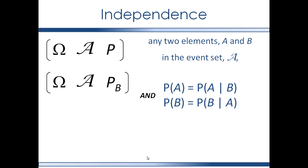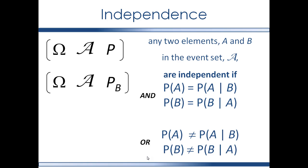If the probability of A is equal to the probability of A given B, then A and B are independent elements in the event set. As well, if the probability of B is equal to the probability of B given A, then A and B are independent elements in the event set. So this is the definition of independence. If these conditions are not true, then the two elements are not independent.